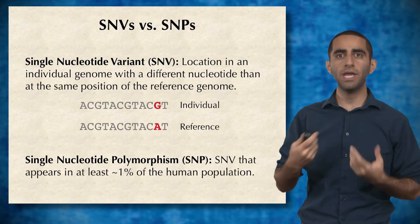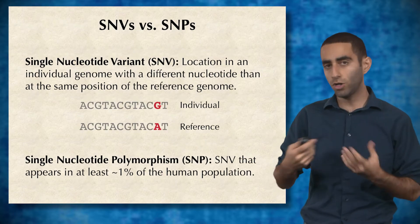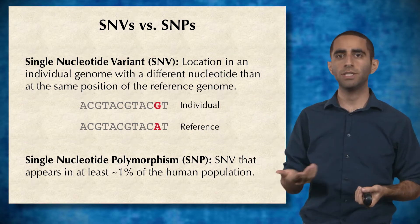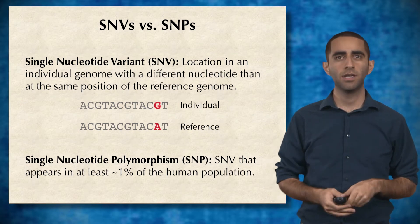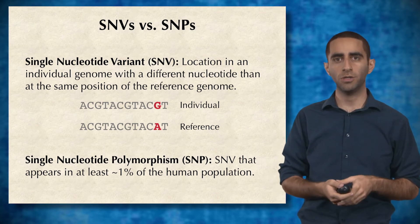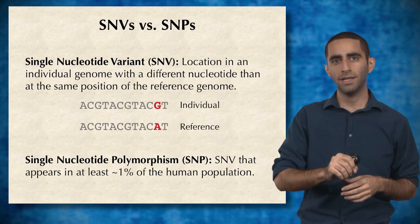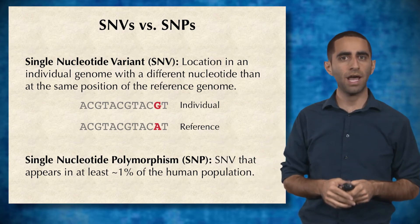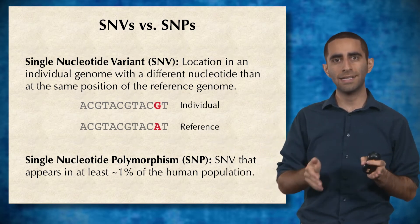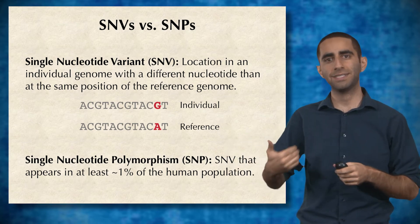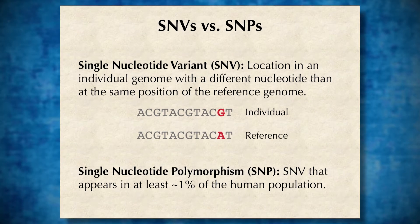We have variations in the human genome, and specifically we'll be looking at single nucleotide variants, or SNVs. A single nucleotide variant, or SNV, is a location in an individual's genome that has a different nucleotide than the same position in the reference genome. In this example, the individual has a G at the second to last position, whereas the reference genome has an A in that same position — it's just variation with respect to your reference genome.